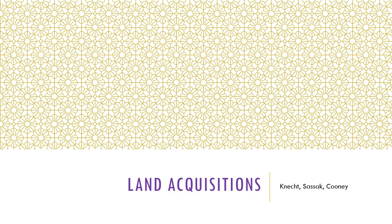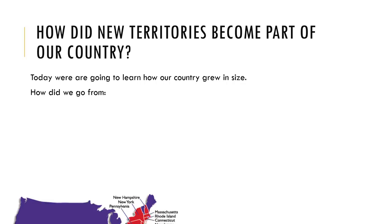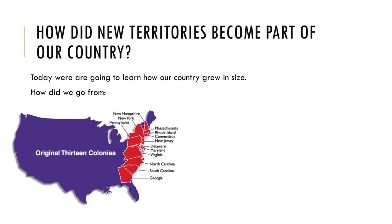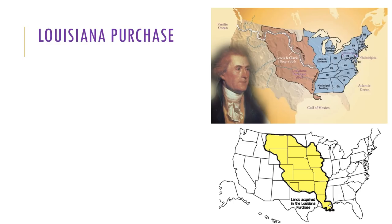Title your notes 'Land Acquisitions' and follow along by drawing pictures and copying down the notes in your history notebook. I encourage you to choose main ideas to draw purposeful doodles about so that you can remember some of the stories I tell you in the video, as these are fair game on future quizzes and writing assignments. Today we are going to learn how our country grew in size — how did it go from the 13 colonies to the United States of America that we know today? Land areas and expansion to 1860. Let's get started.